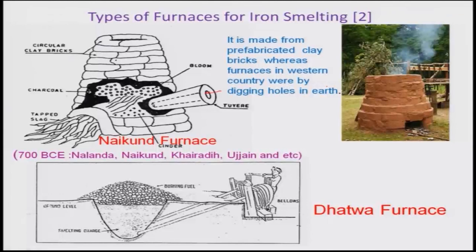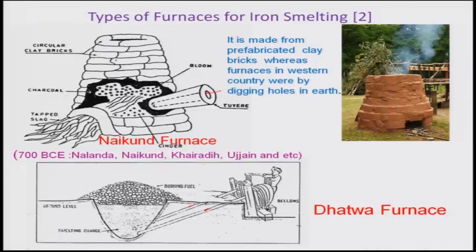There is another dhatwa furnace where the smelting charges are placed, and it is also partially in the ground. There are burning coals and a bellows here that supply air through air passages. Pressing the bellows causes air to be sucked in and blown through.